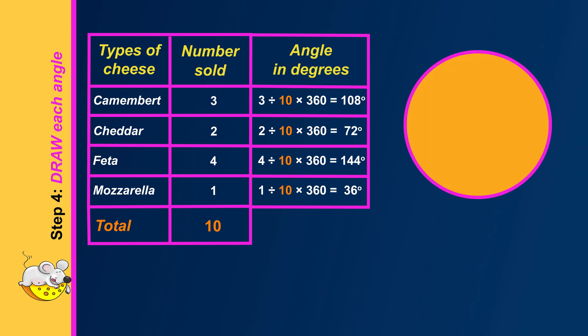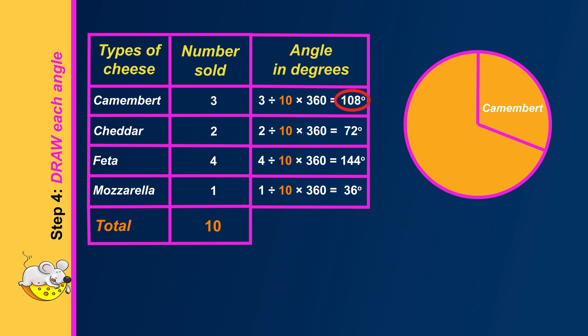Now in step four we draw the angles in the circle. First draw a starting line. The angle for camembert is 108 degrees — that's a bit larger than a right angle of 90 degrees. Using a protractor and a ruler, draw the sector that represents camembert. This new line is the starting line for the next cheese, cheddar. The angle for cheddar is 72 degrees — a bit smaller than a right angle of 90 degrees. Using a protractor and a ruler, draw the sector that represents cheddar.